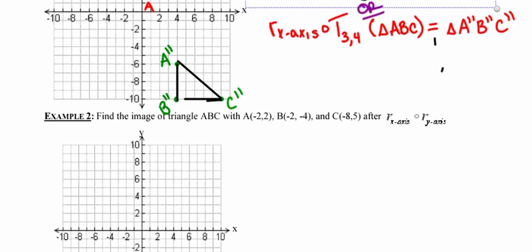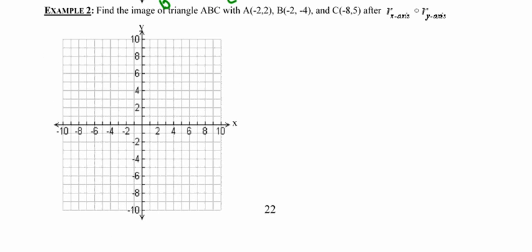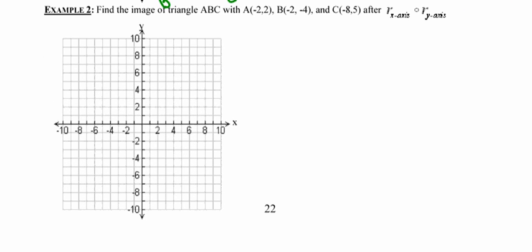In number two, it says find the image of triangle ABC after a reflection in the x-axis following a reflection in the y-axis. Now just like I did with the first example, I'm going to go ahead and start by plotting all of these points. So there's point A, point B, and lastly point C.